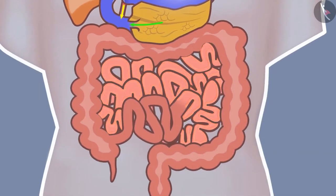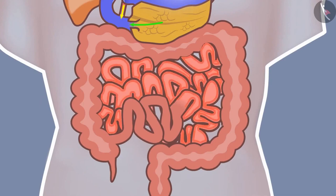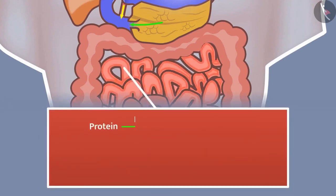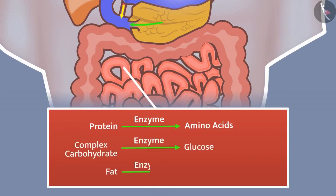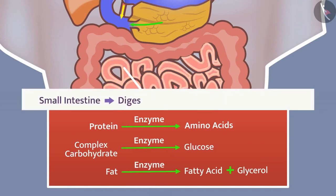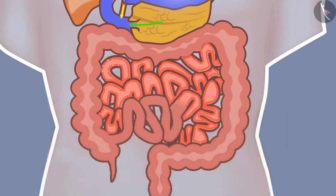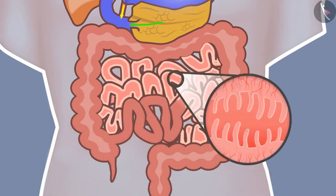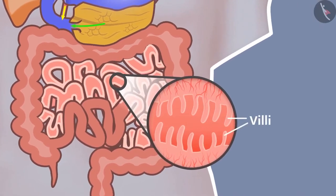Glands in the intestinal wall secrete intestinal juice. Enzymes present in it convert proteins into amino acids, complex carbohydrates into glucose, and fat into fatty acids and glycerol. Therefore, the small intestine is the site of complete digestion of proteins, carbohydrates and fats. The wall of the intestine absorbs the digested food. The inner lining of the small intestine has numerous finger-like projections called villi.